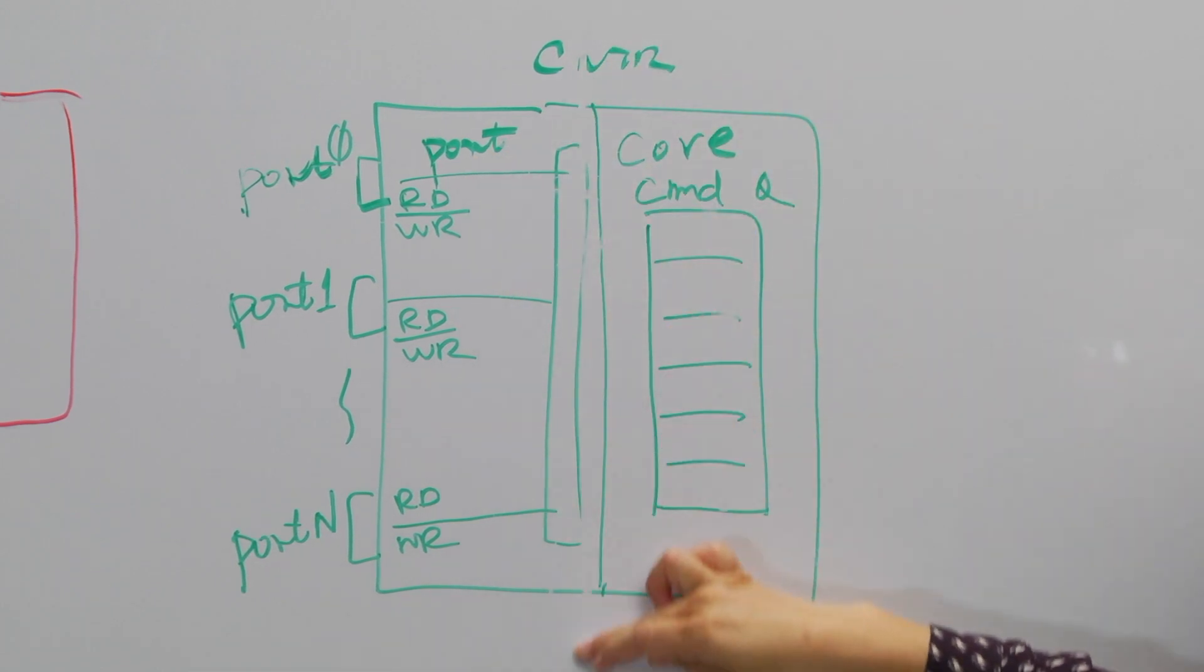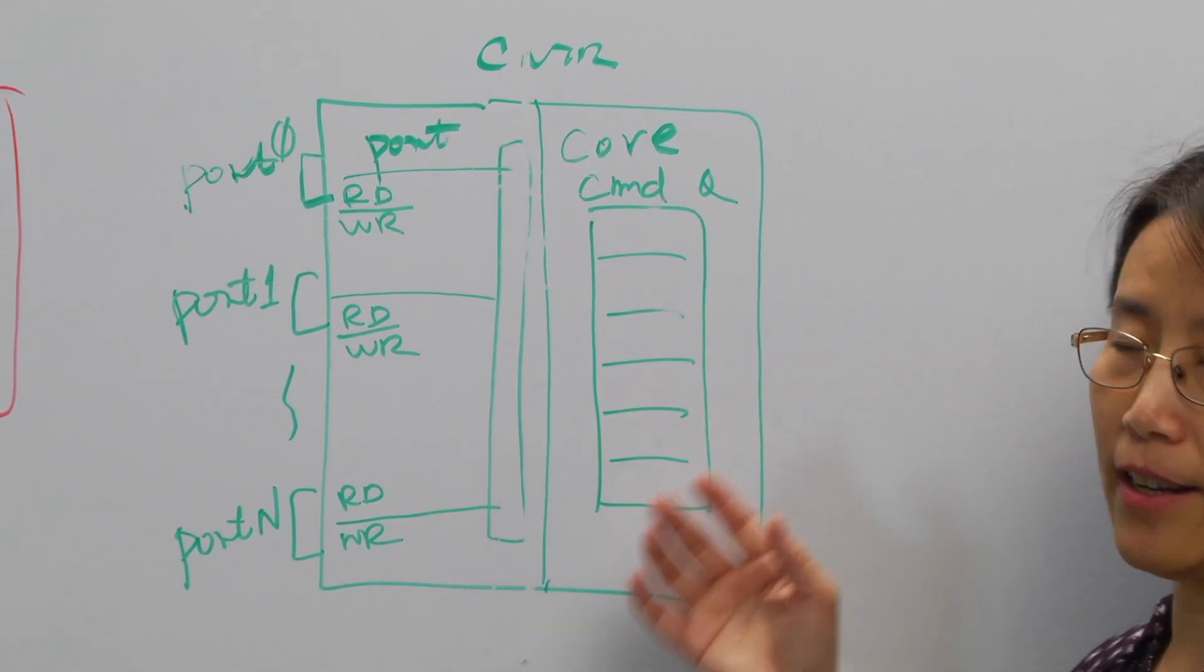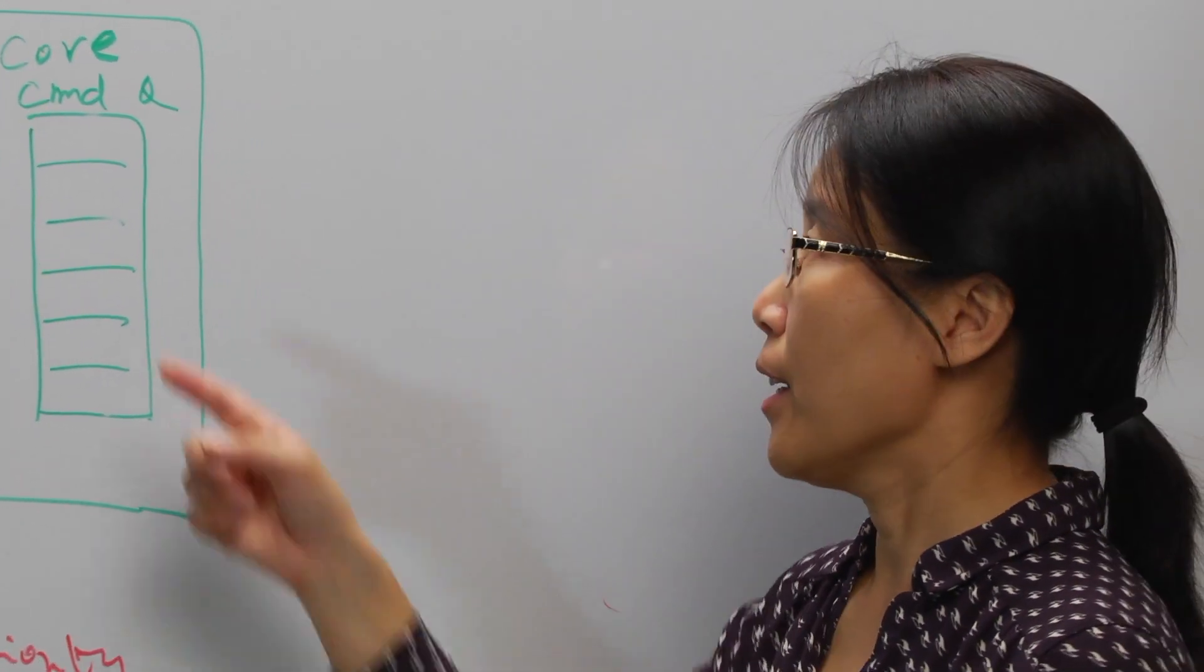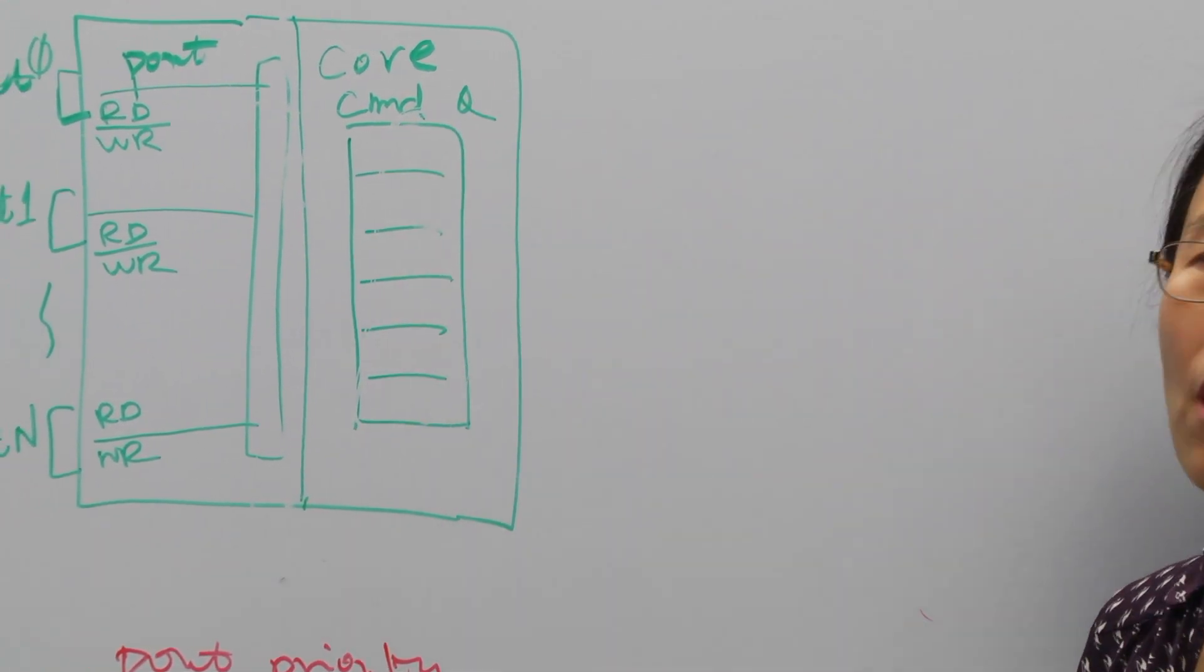Between the port and the core, there is arbitration logic. So arbitration logic will select which command from which port gets into the command queue, because in the core we have only one command queue for all the ports.